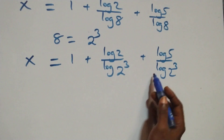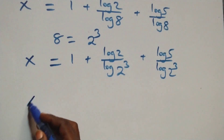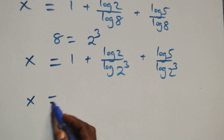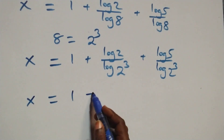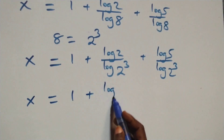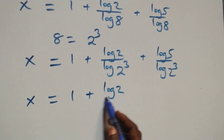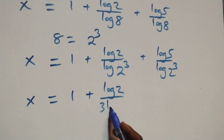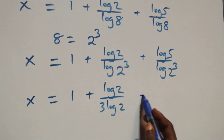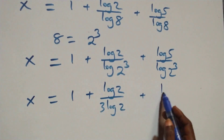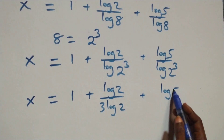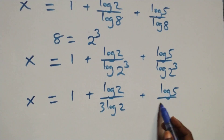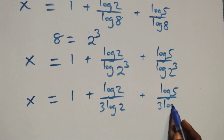Since log 8 equals 3 log 2, we substitute to get x equals 1 plus log 2 over 3 log 2 plus log 5 over 3 log 2.